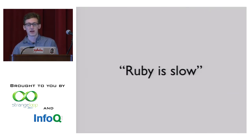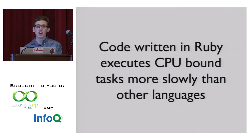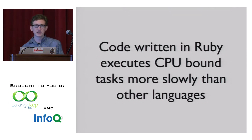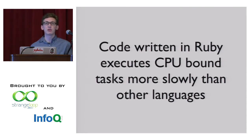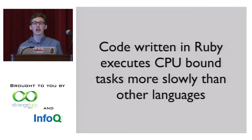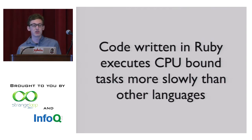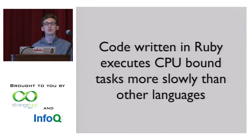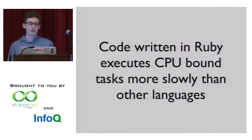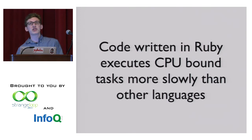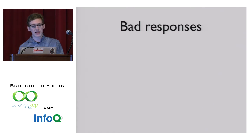It's about the set of dynamic languages we basically wrote in the 90s, and we wrote while ignoring a whole bunch of research about how to make these fast. What we mean when we say Ruby is slow is: code written in Ruby executes CPU-bound tasks more slowly than other languages. We're implicitly thinking it runs on MRI or CRuby or CPython. We're talking about CPU-bound as opposed to IO-bound, and relative to other languages.